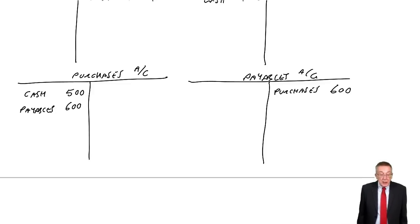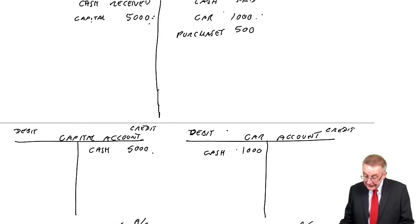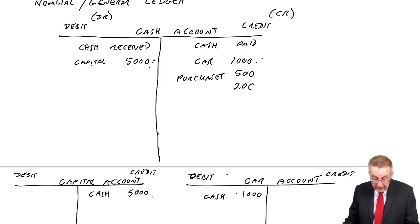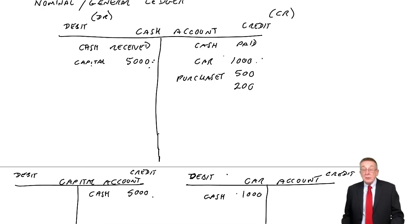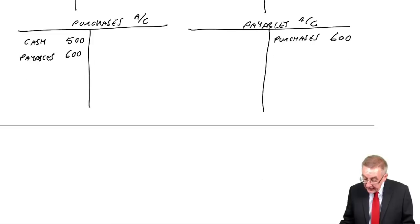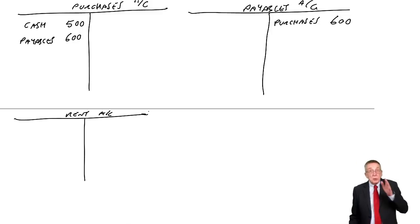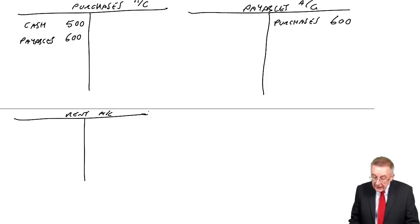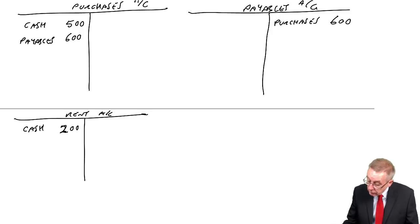We pay rent of £200 cash. We've paid cash, so first effect: we've less cash — credit cash. The double entry: we need to record the fact we've paid rent. I'll open up a rent account and it goes on the opposite side. So credit cash because we've paid cash; debit rent 200 to record the fact we've paid rent.